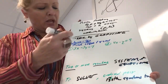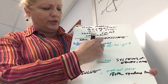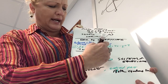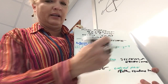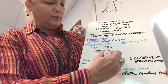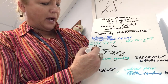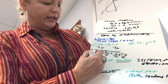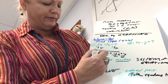For warm-up number one, I subtract 3x to get negative 2y equals negative 3x plus 7, then divide by negative 2. The slope is three-halves and the y-intercept is zero, negative seven-halves.